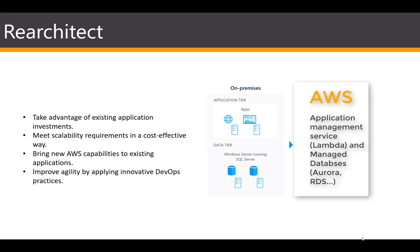So why or when would you use this? You can take advantage of existing application investments, meet scalability requirements, bring new capabilities that are only available on the cloud in AWS into your organization or app, and improve agility by applying innovative DevOps practices — like CodeCommit and CodePipeline — within your applications or architecture.